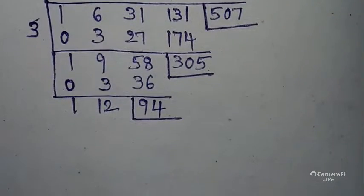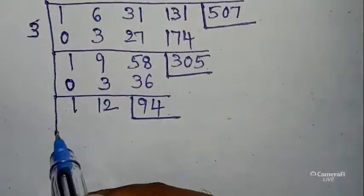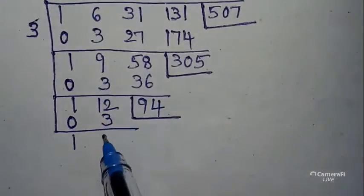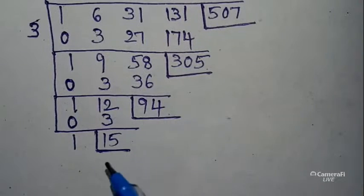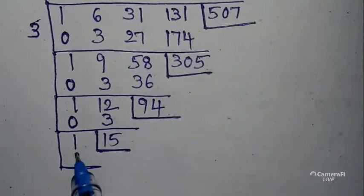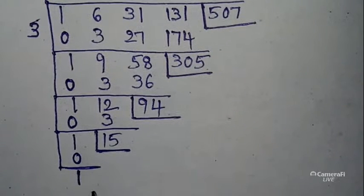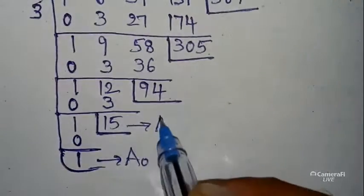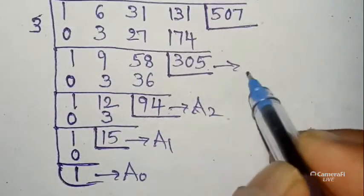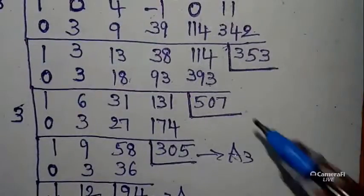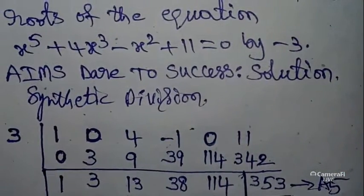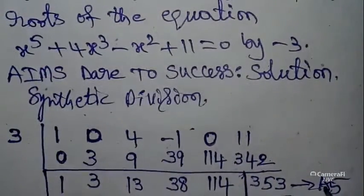Take one more box. First value keep 0. Addition: 1 + 0 = 1. Cross multiply: 1 × 3 = 3. Addition: 12 + 3 = 15. So the value is 15. Now label these results: the first value is a₀, then a₁, a₂, a₃, a₄, and a₅. The highest degree is 5, so we have a₅ confirmed.